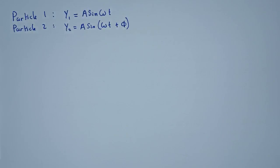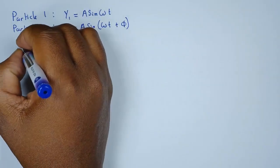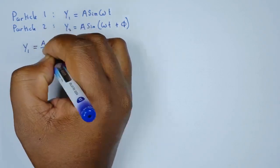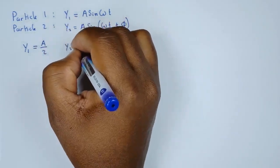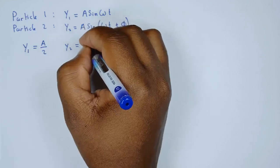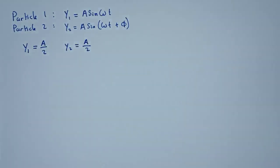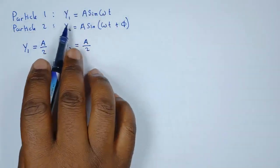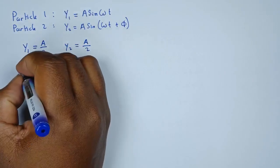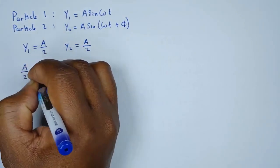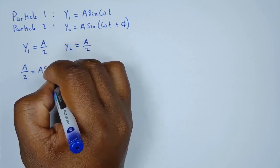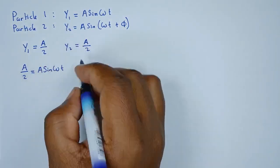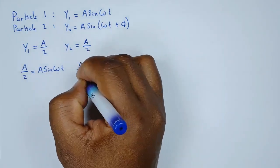It's important to note that we're told the displacement is half the amplitude when they pass each other. So when the displacement for both particles is half the amplitude, this is when they pass each other. We substitute into both equations: for particle one, A/2 = A sin(ωt), and for particle two, A/2 = A sin(ωt + φ).